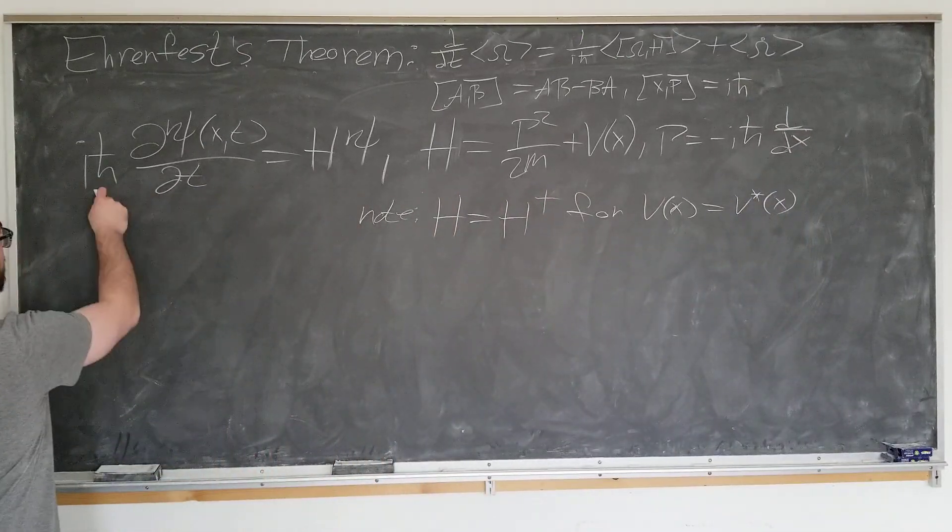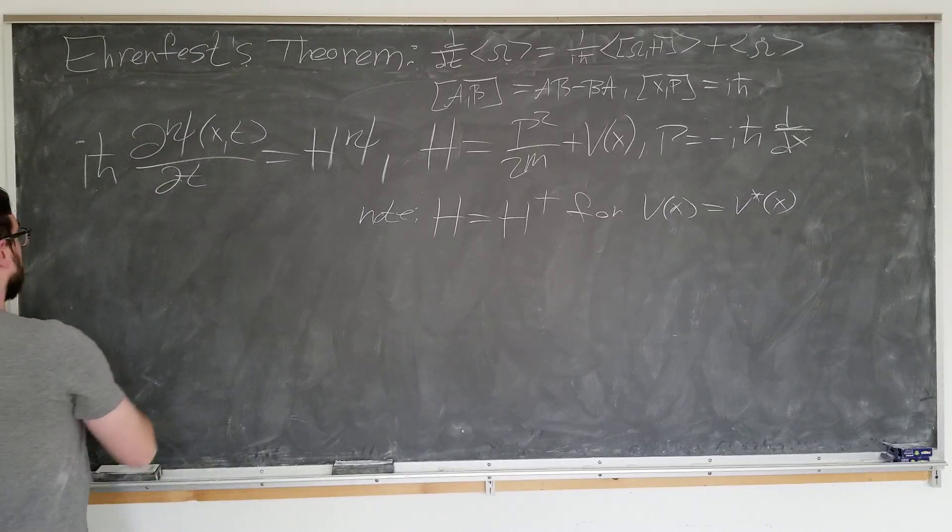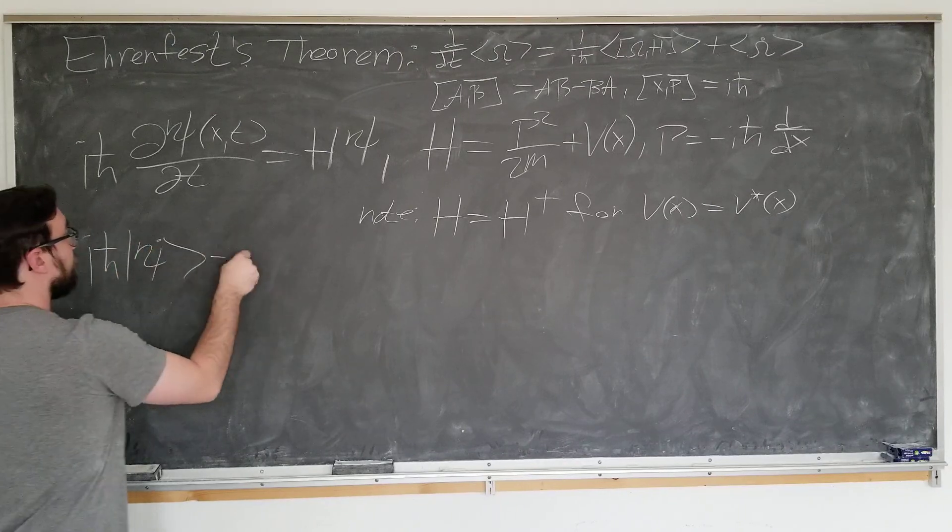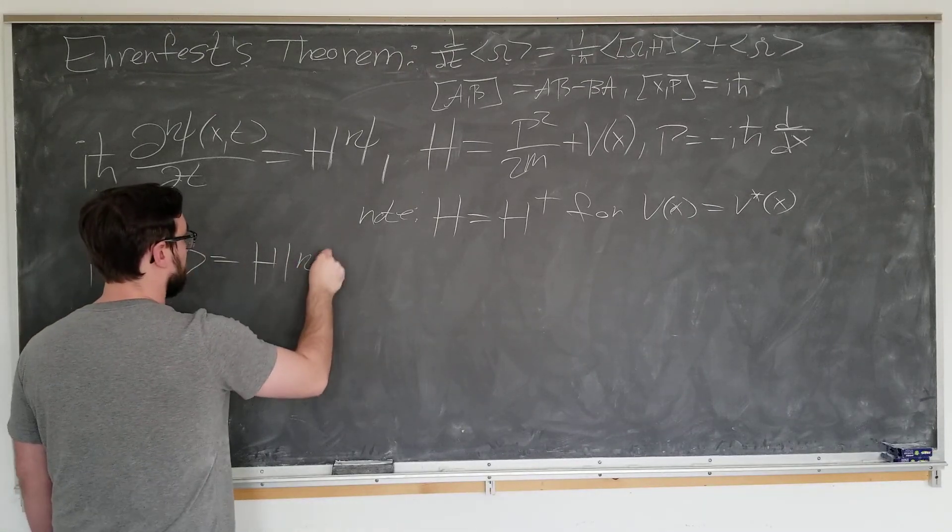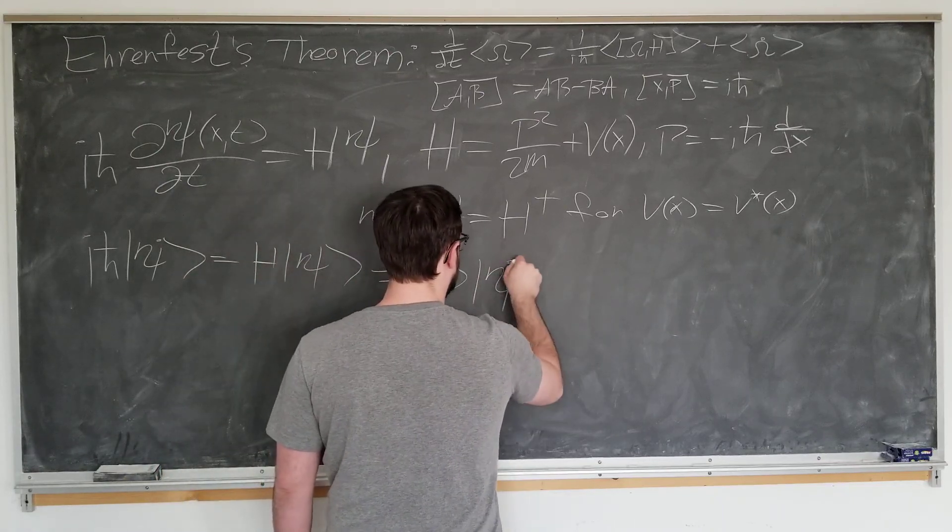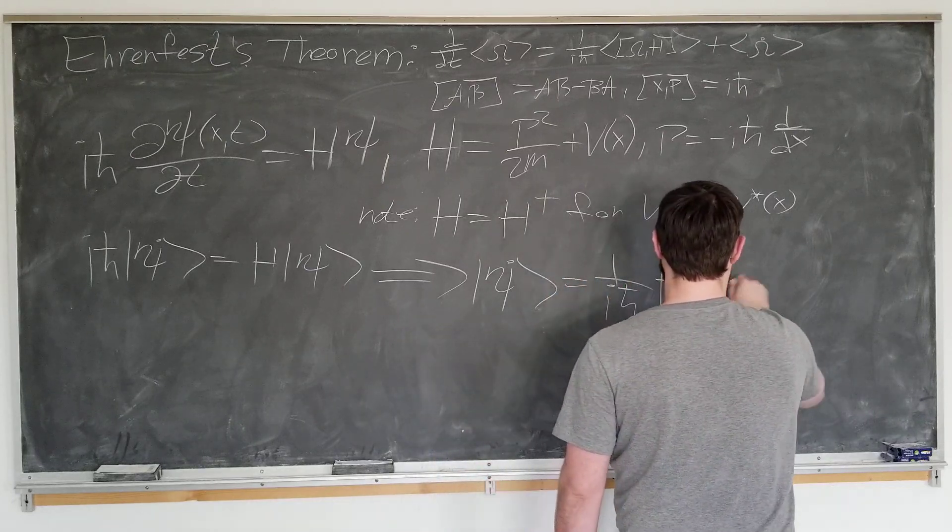Let's go ahead and write Schrodinger's equation in a slightly different form using Dirac's bra ket notation. i h bar psi dot equals h psi, or isolating psi dot, one over i h bar h on psi.